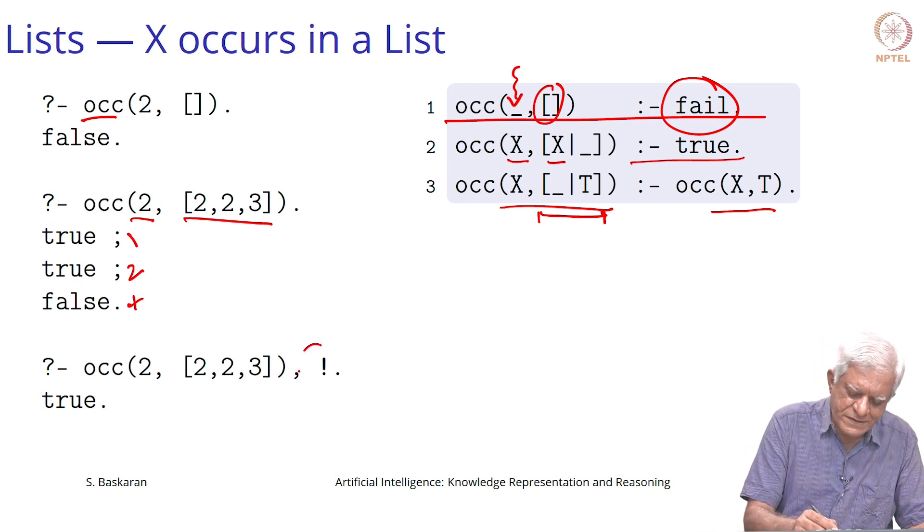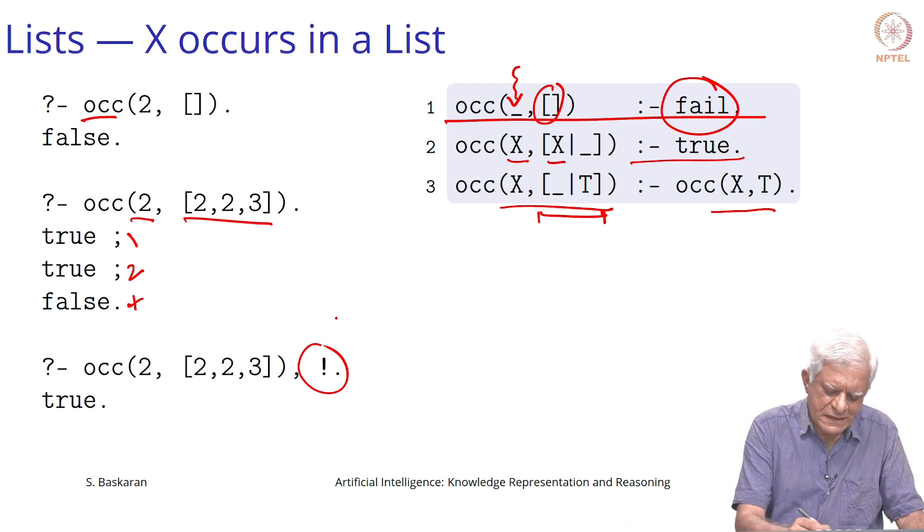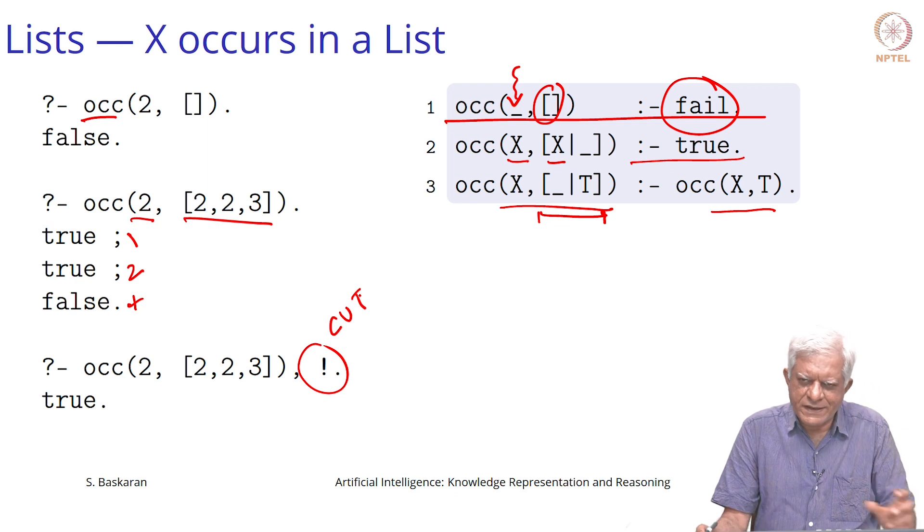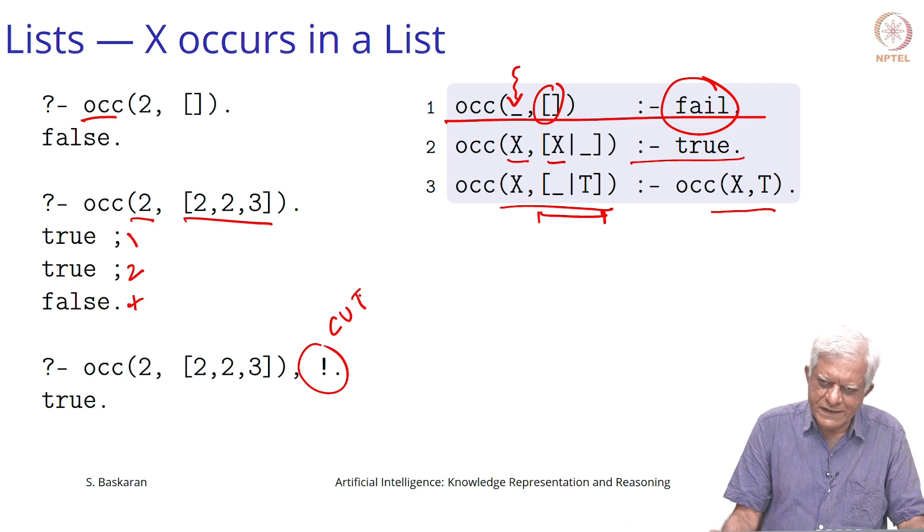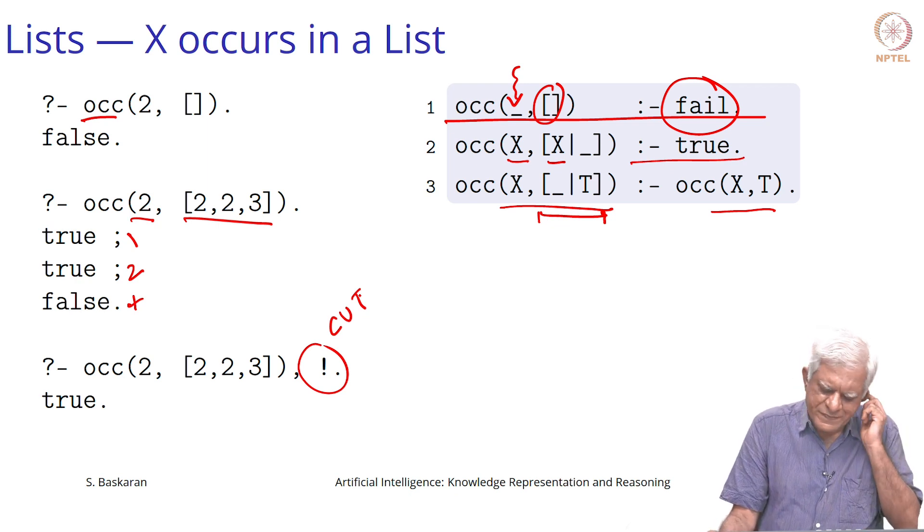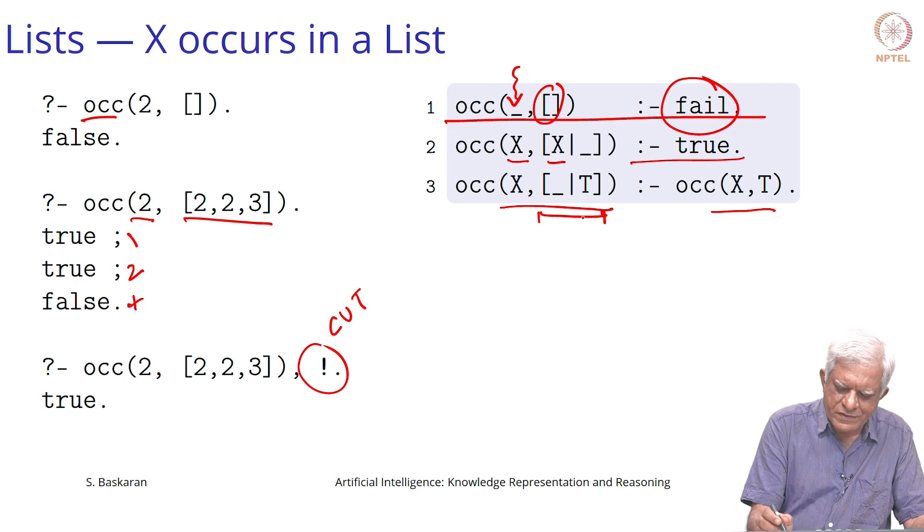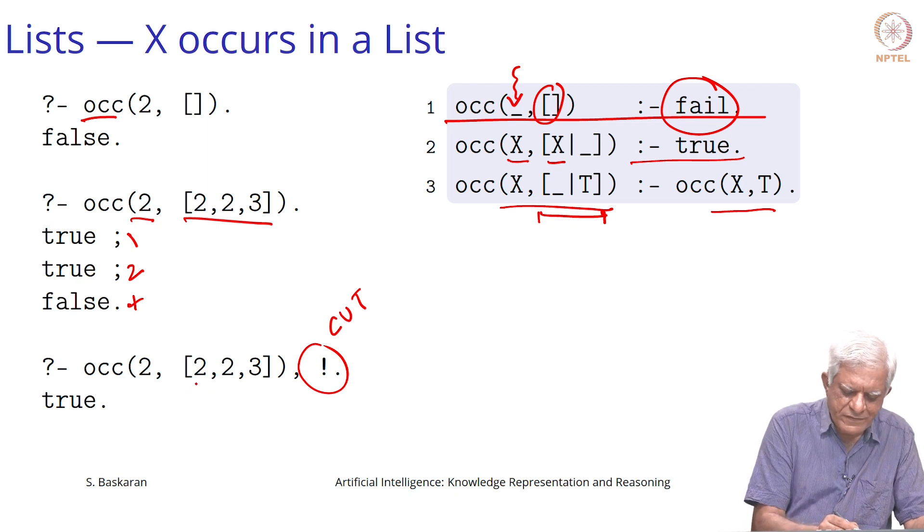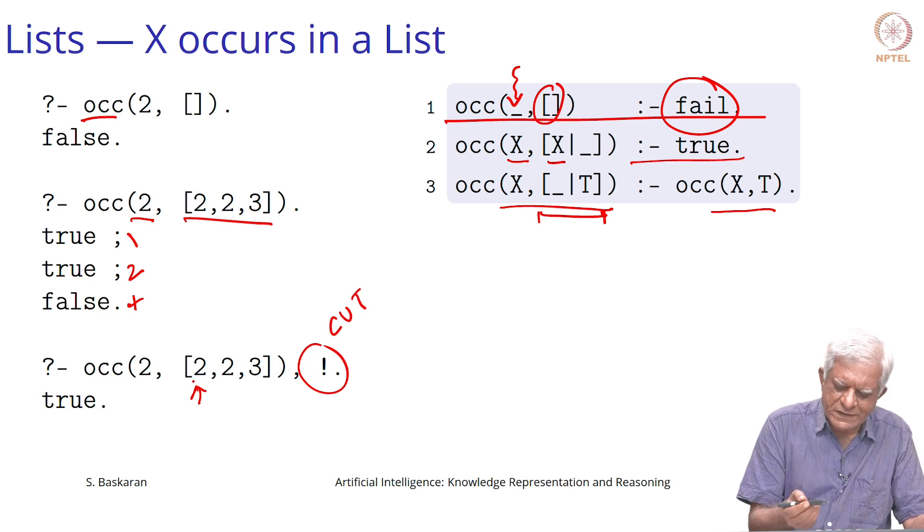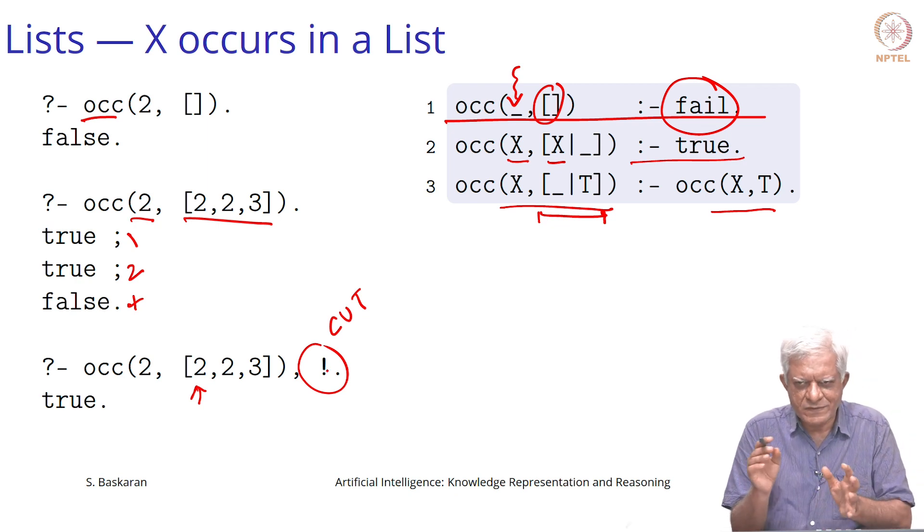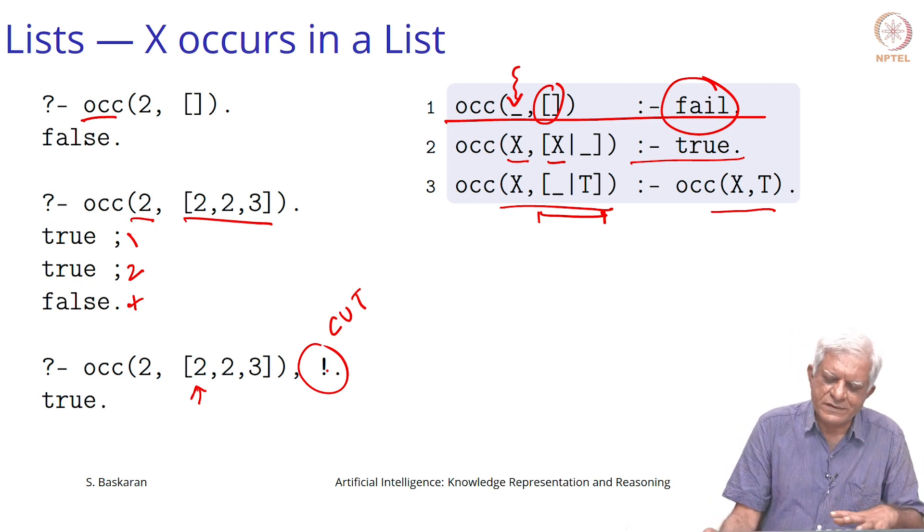By this feature which we will study, it is called cut. It is called the cut operator. It has a procedural semantics. It does not have a logical semantics, but we will see that in a short while. What is the impact of cut is that once it is found that there is one occurrence of 2, it does not look into the tail of the list. This cut stops from looking at the tail of whatever remains. You have found the 2, just return the answer true, and that is the end of the whole thing.